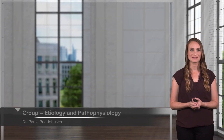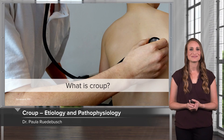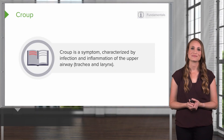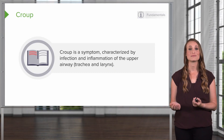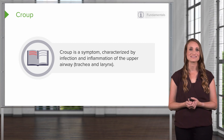Now let's talk about the respiratory disorder croup. What is croup? Croup is a symptom characterized by infection and inflammation of the upper airway, which is the trachea and larynx.